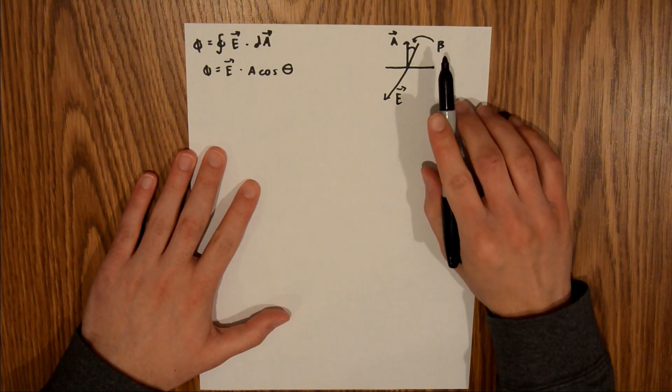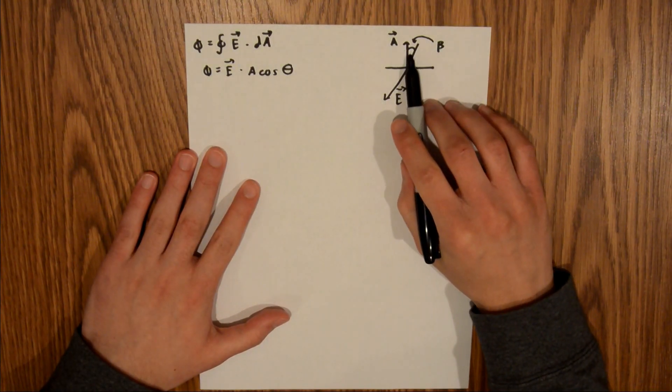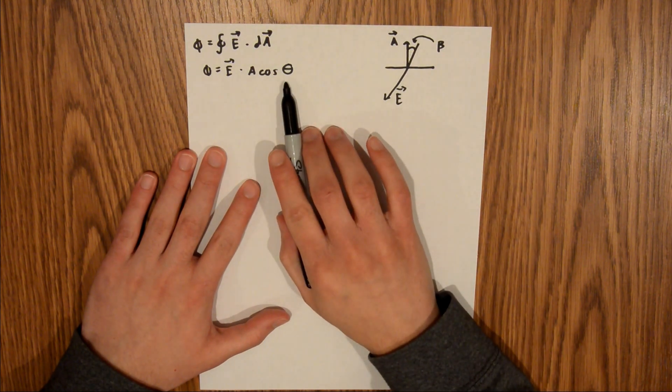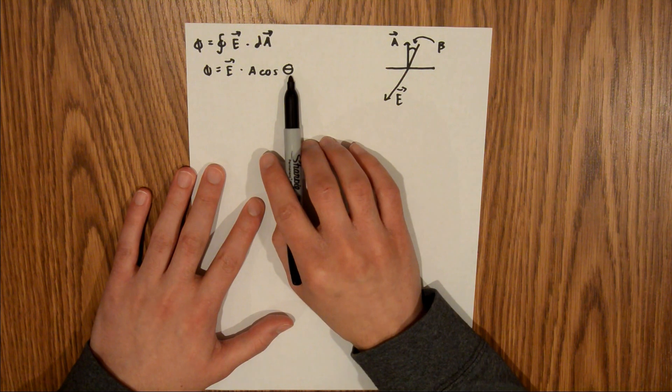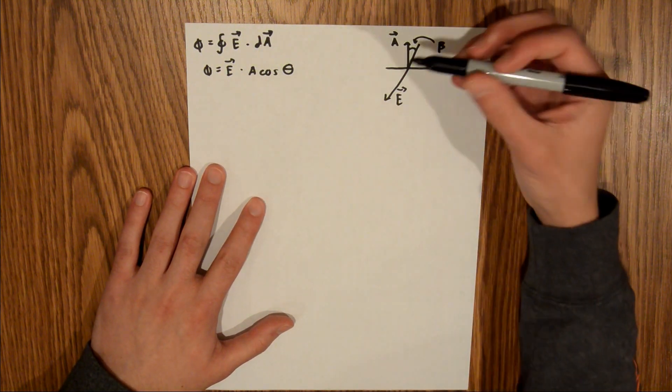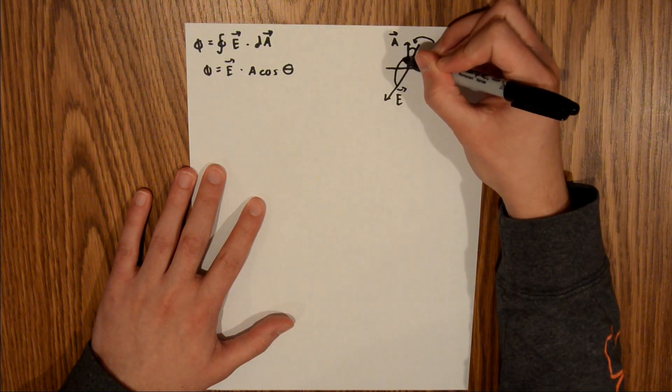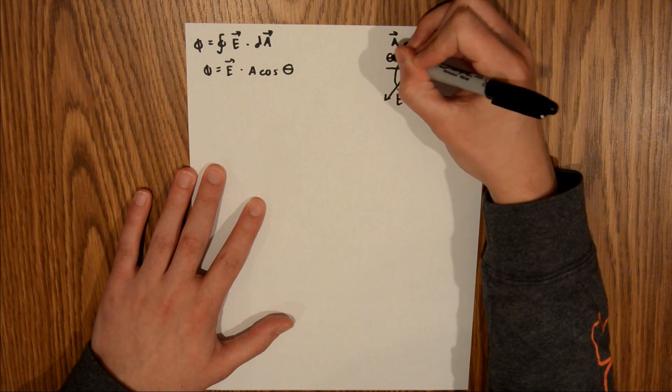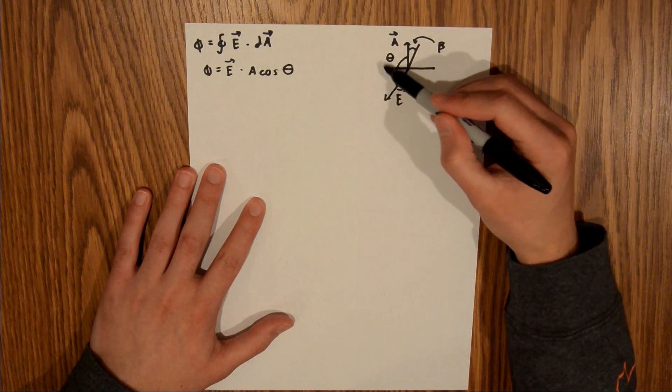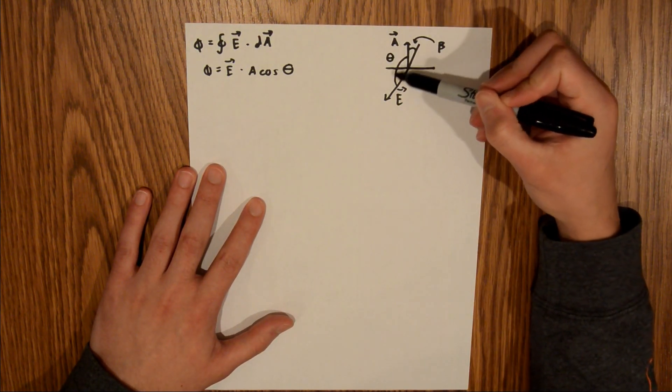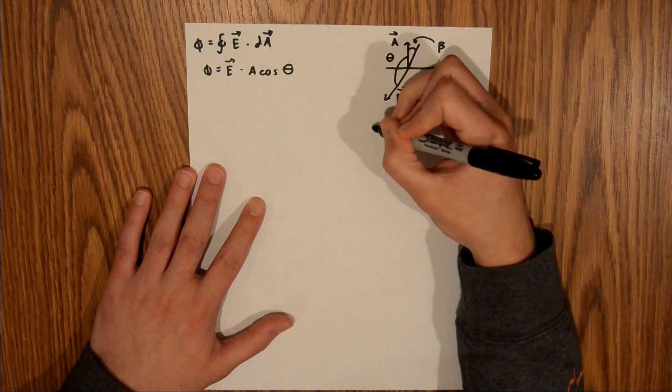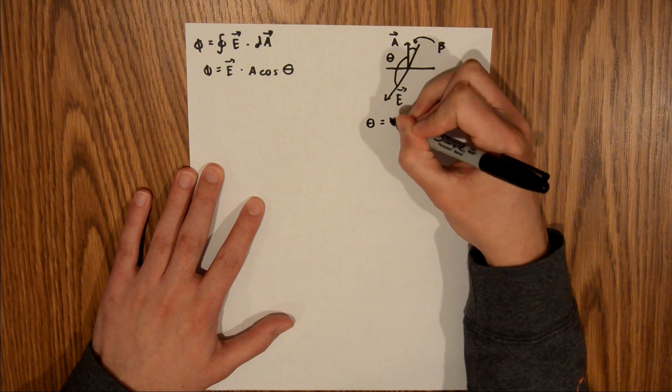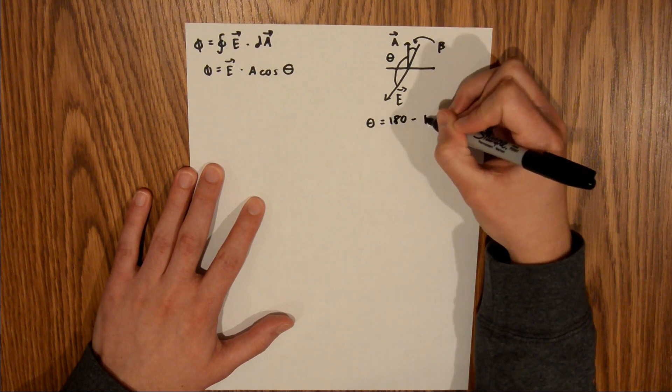The reason I marked this as beta is because this given angle is not the angle we plug in here. This angle is the angle between the electric field vector and the vector normal to the area, so that would be this right here. That right there is theta. To find theta, we can take this entire angle and subtract out beta. So theta equals 180 minus beta.